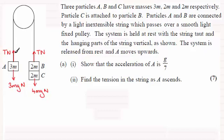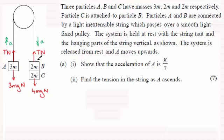Now A is ascending so it's gaining speed, and its acceleration we'll mark in and call it a. As A ascends, the particles B and C descend and they will accelerate, and the accelerations will be exactly the same. The reason for that — and we're often asked this as well — is that the string is inextensible; it doesn't stretch. So as soon as this particle moves, this one will move as well.